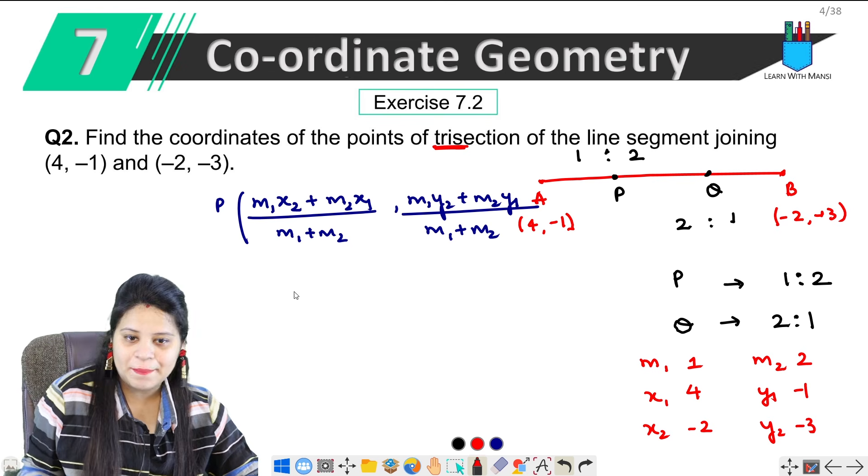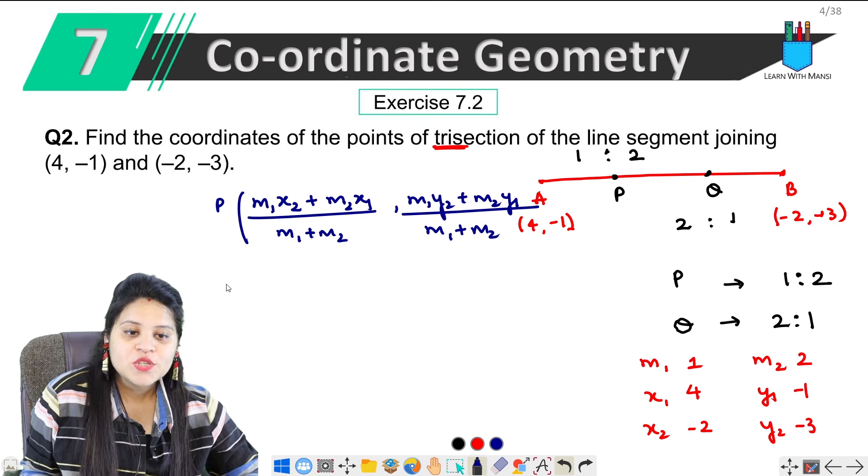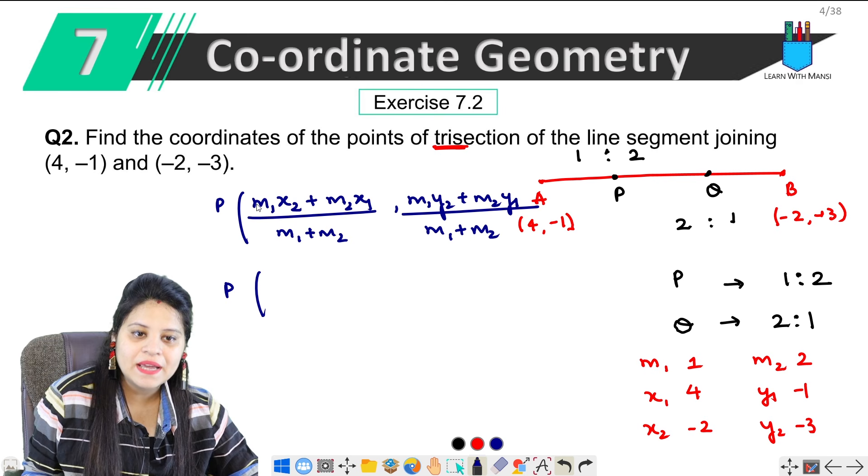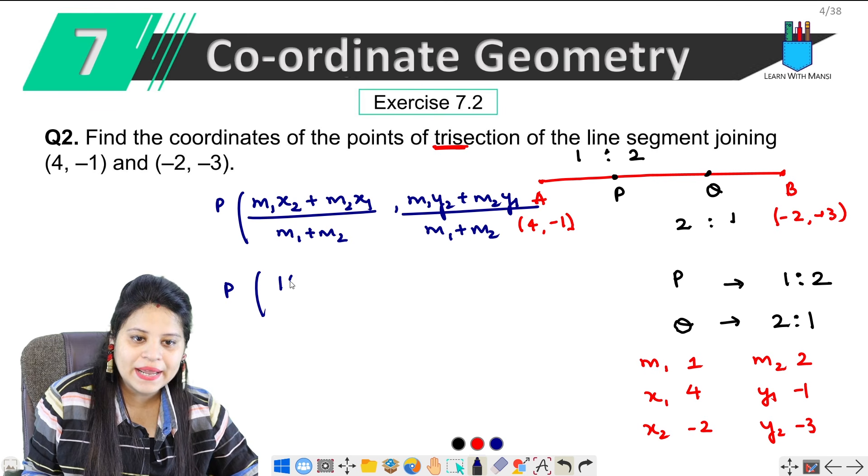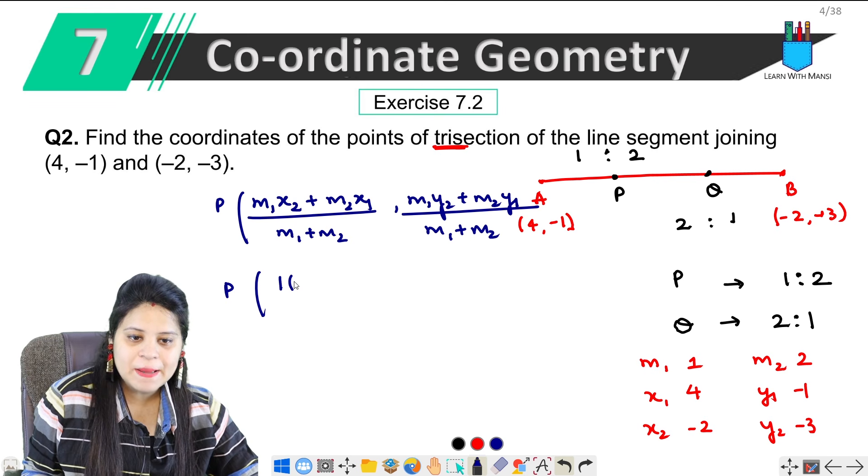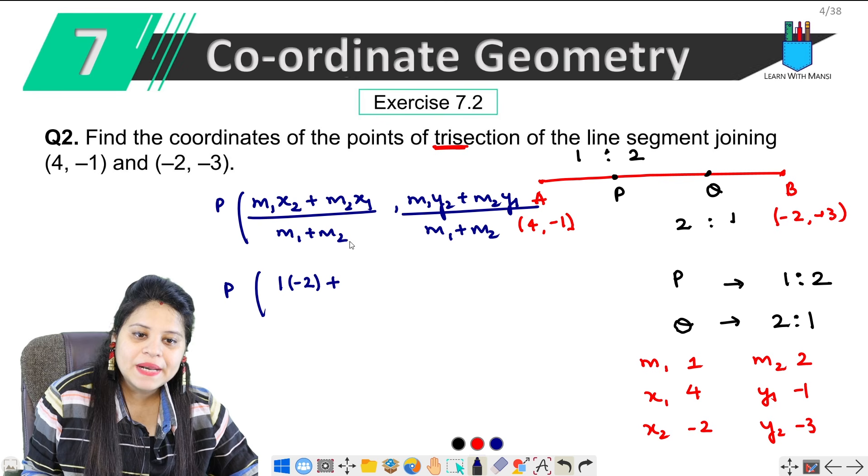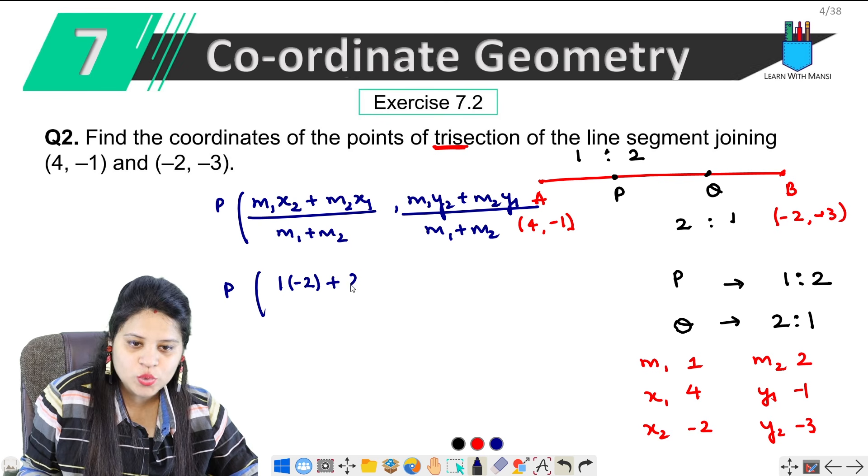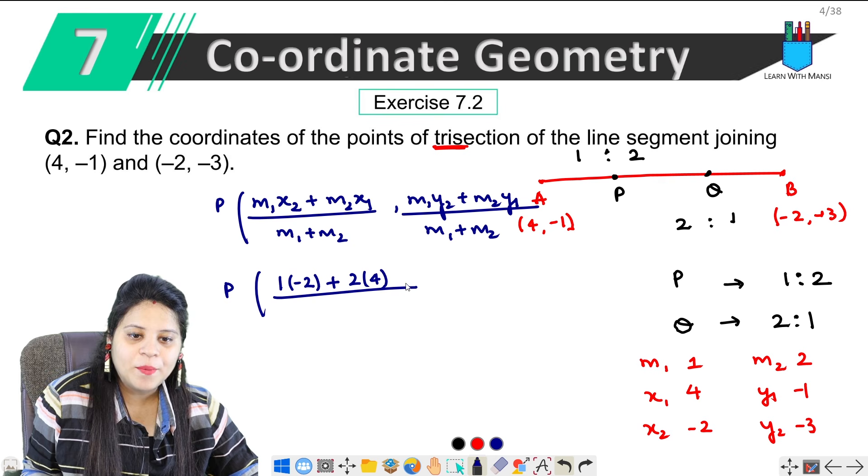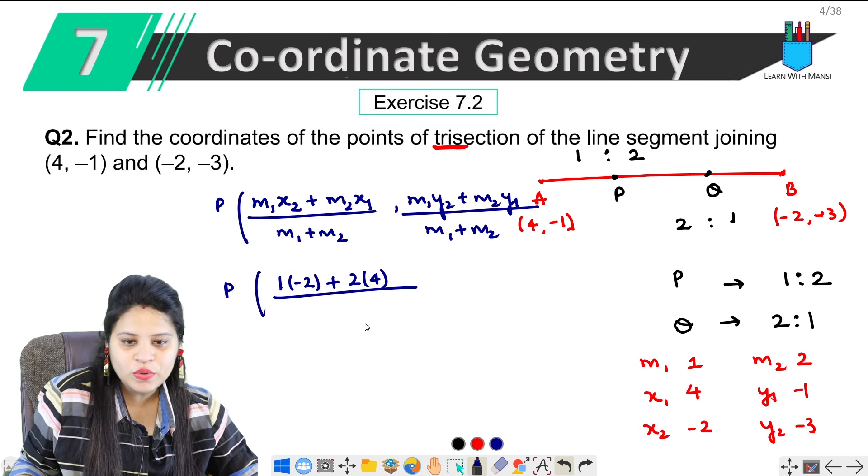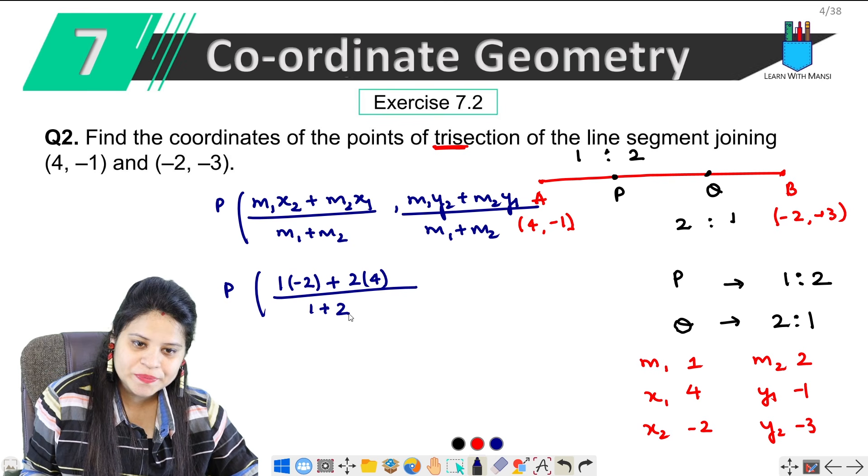Okay, done. Now we put values here and solve it. So we have P: m1, 1, x2 we have -2, plus m2 we have 2, x1 we have 4, upon m1 + m2, 1 + 2.